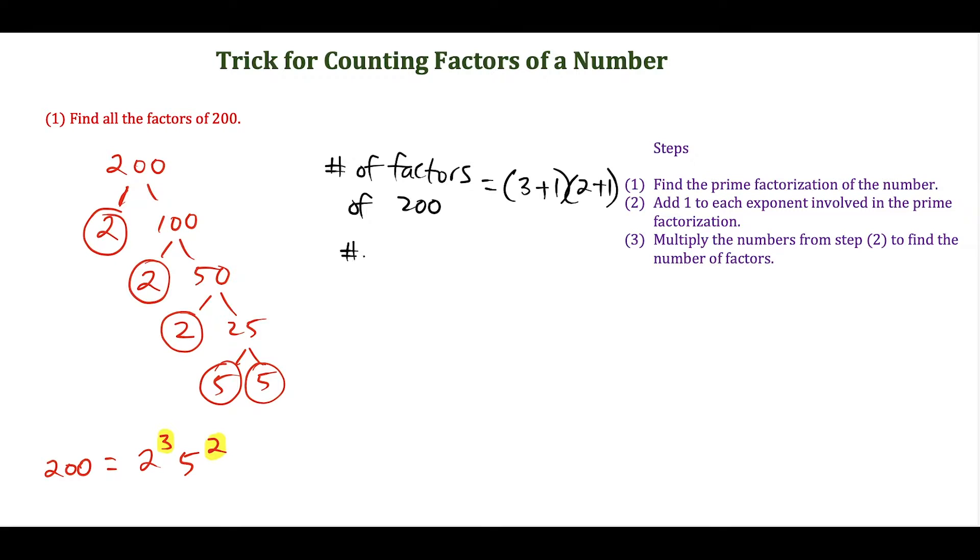This tells us the number of factors of 200 is 4 times 3, which equals 12. When we start searching for factors of 200, we know we only have to find 12 of them, and then we're finished.